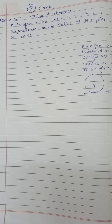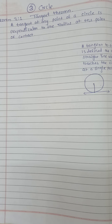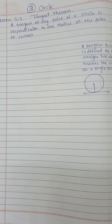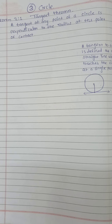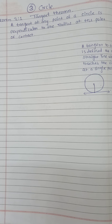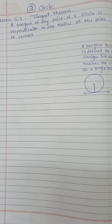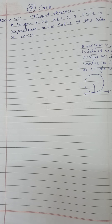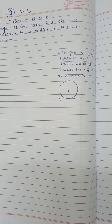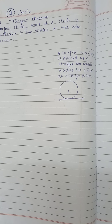Lesson number three: Circle. The first theorem is known as the tangent theorem. Statement: a tangent at any point of a circle is perpendicular to the radius at the point of contact. First we will understand what a tangent is.